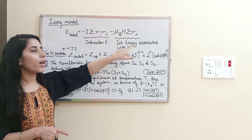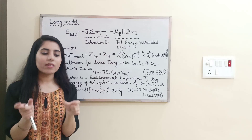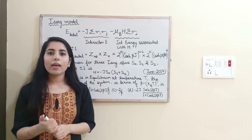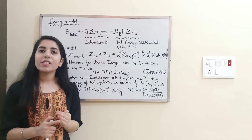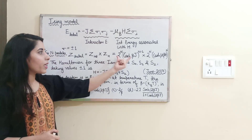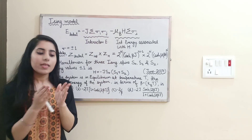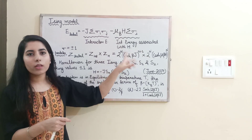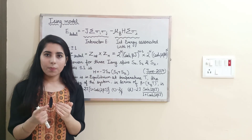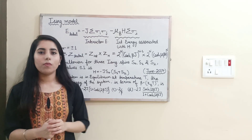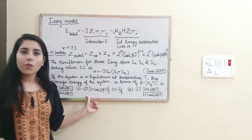To find the total partition function for the complete system, we take the product of the individual partition functions — partition functions are multiplicative in nature. Students sometimes wonder why we multiply; this is because the partition function is multiplicative. Knowing these partition functions for separate interactions allows you to solve any previous year question from this topic.